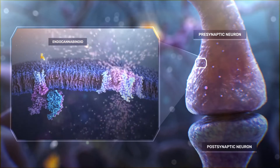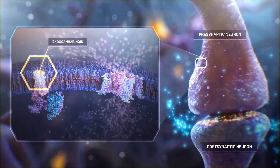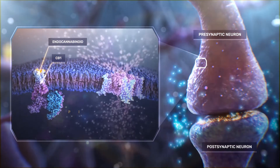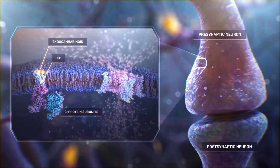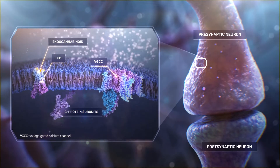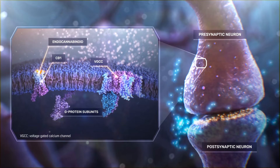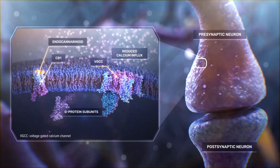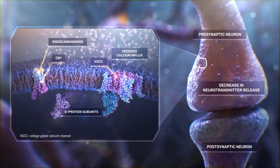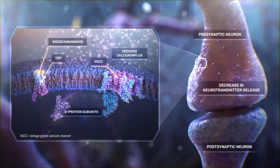Endocannabinoids suppress neurotransmission by stimulating the presynaptic cannabinoid receptor CB1, leading to G-protein signaling that inhibits voltage-gated calcium channels. This signaling pathway reduces calcium influx and decreases the release of neurotransmitters from the presynaptic neuron.